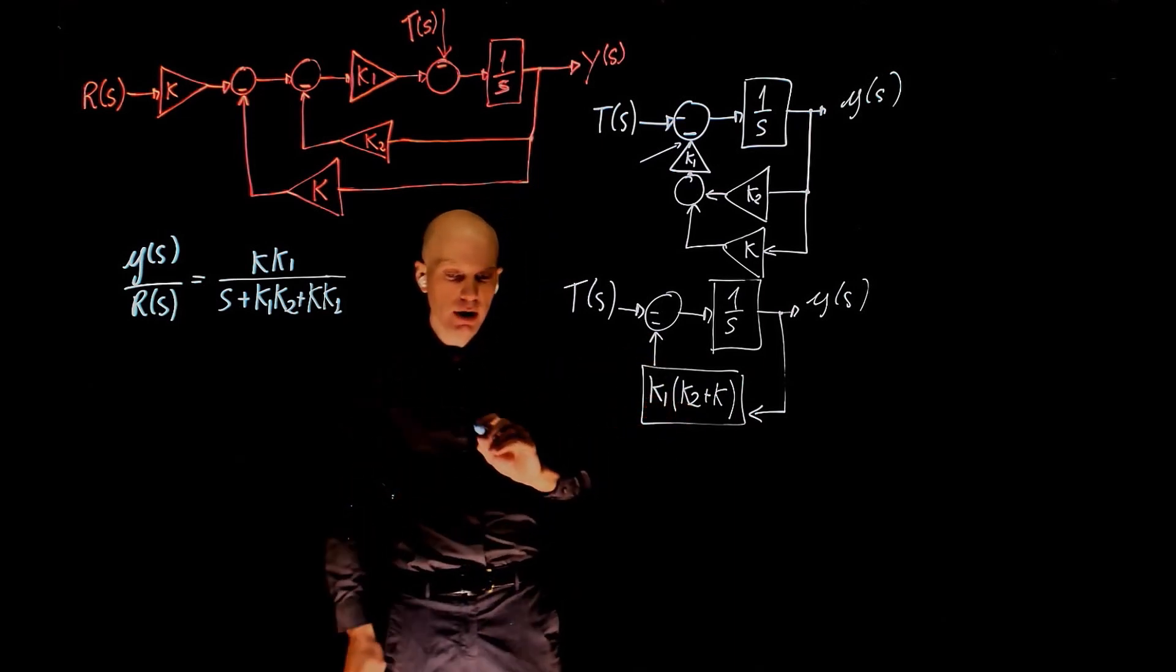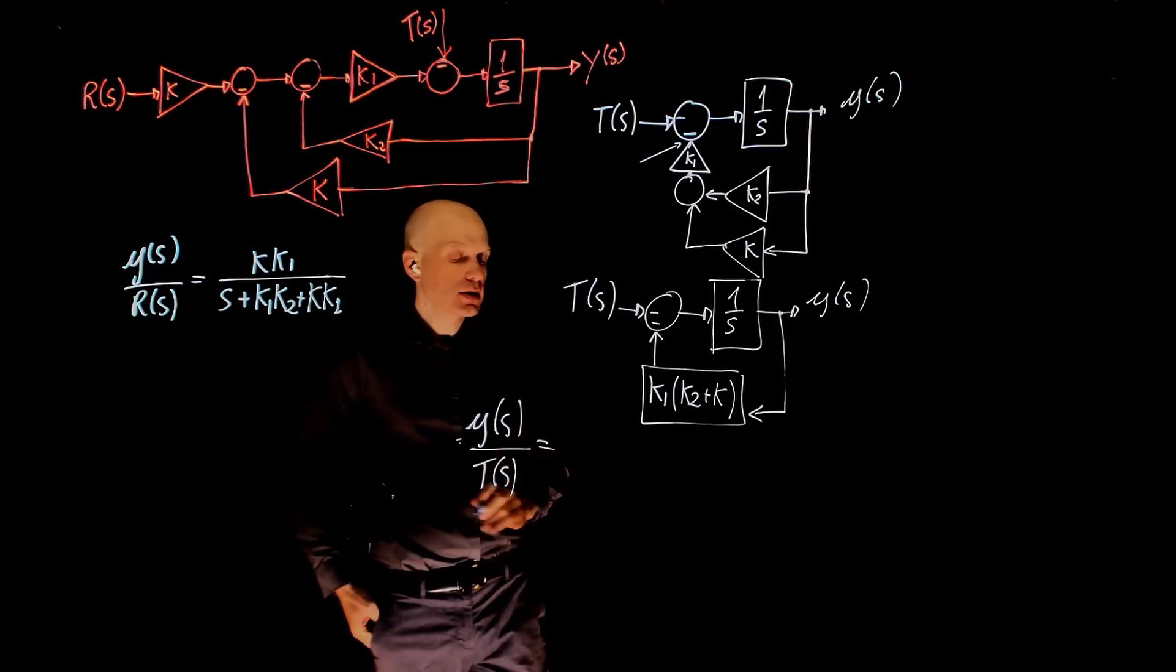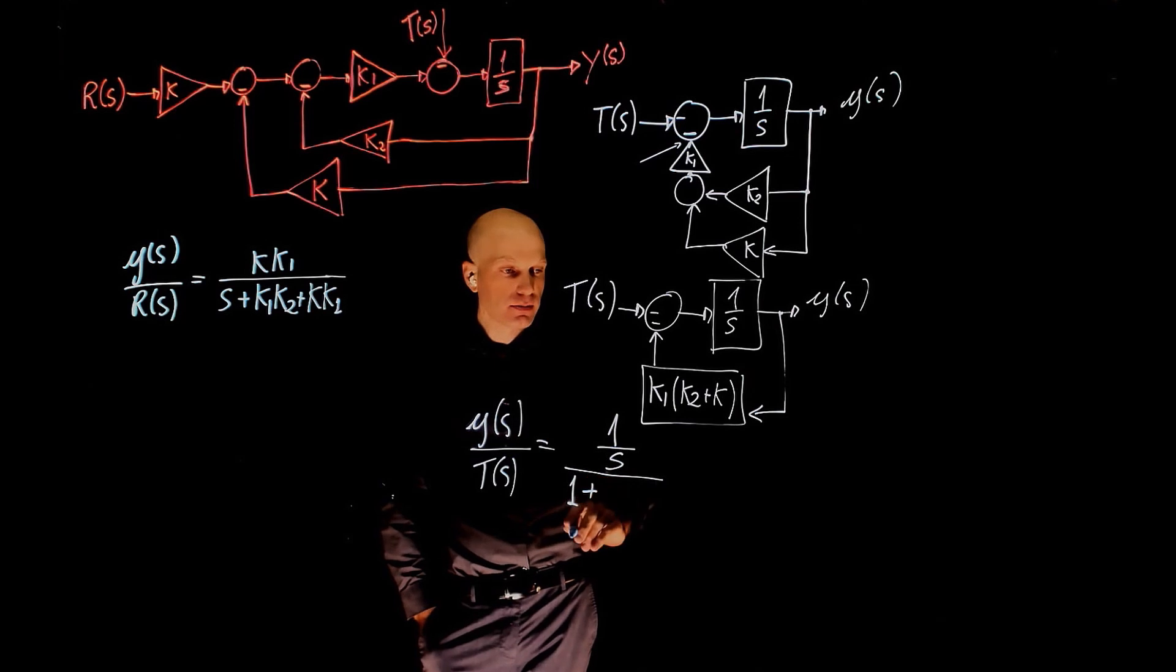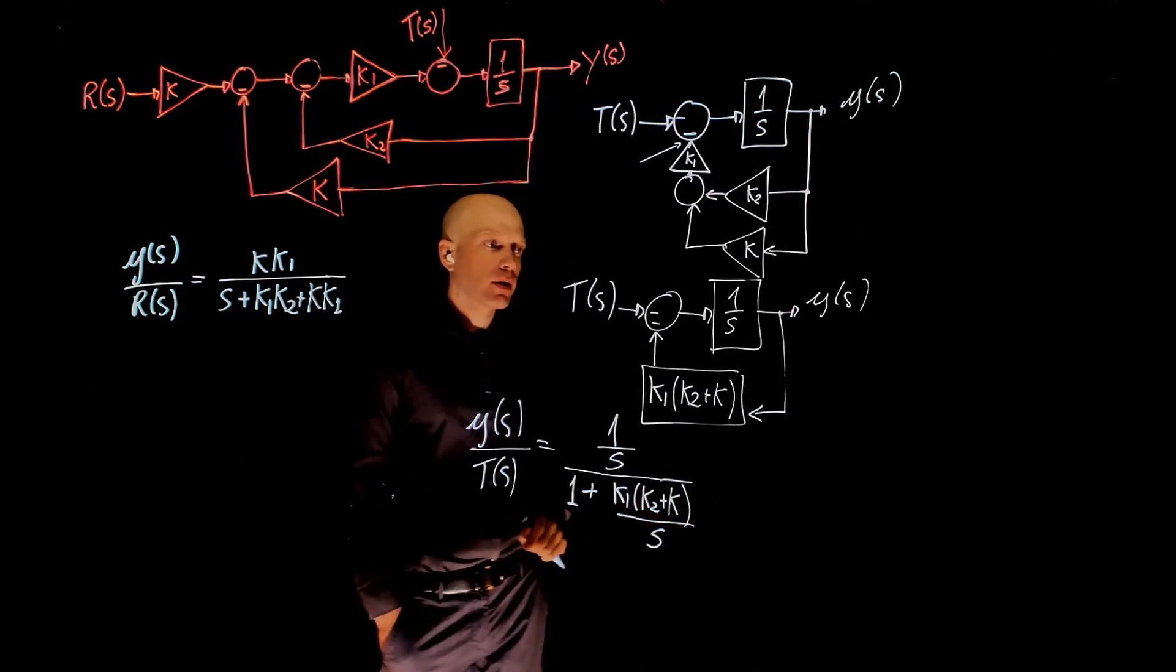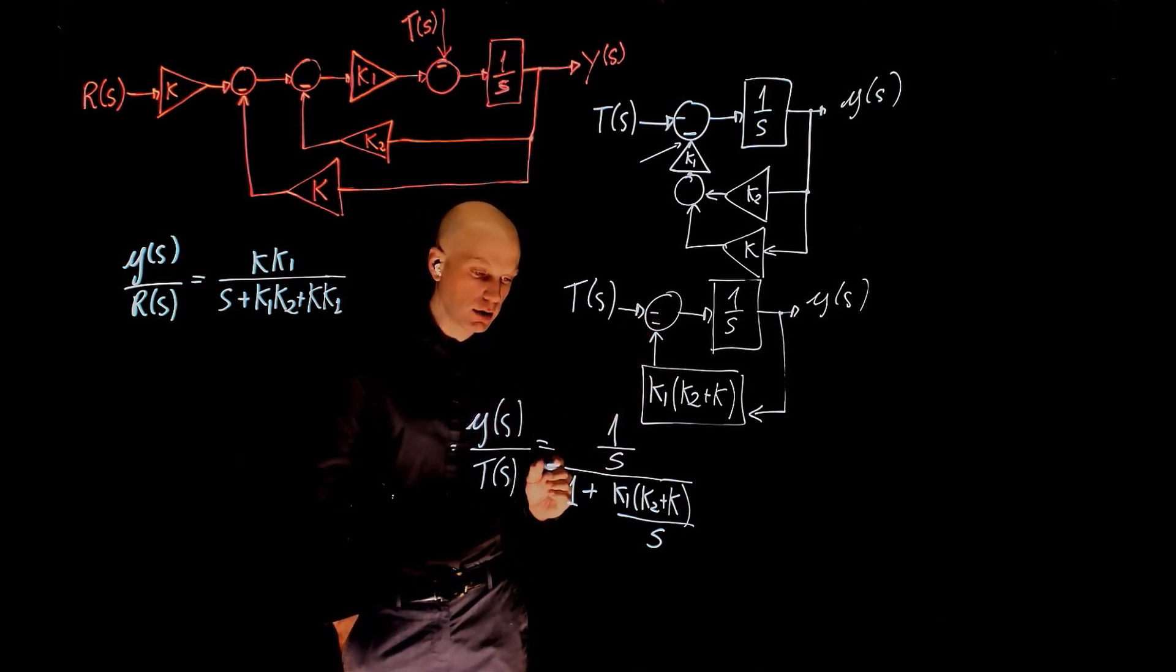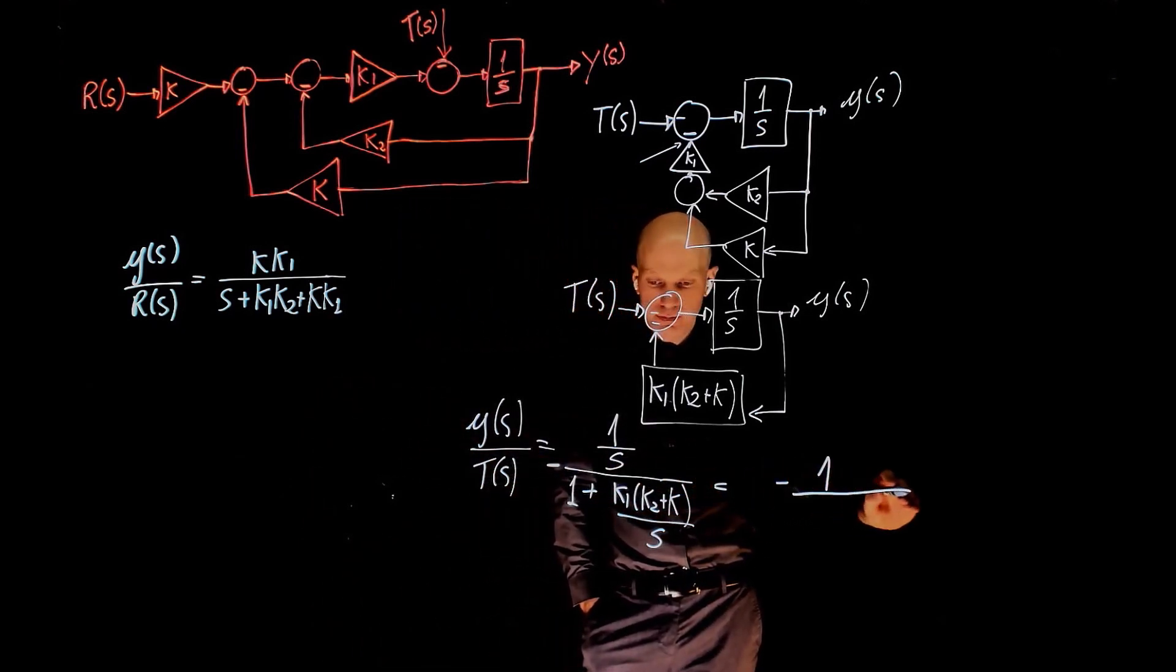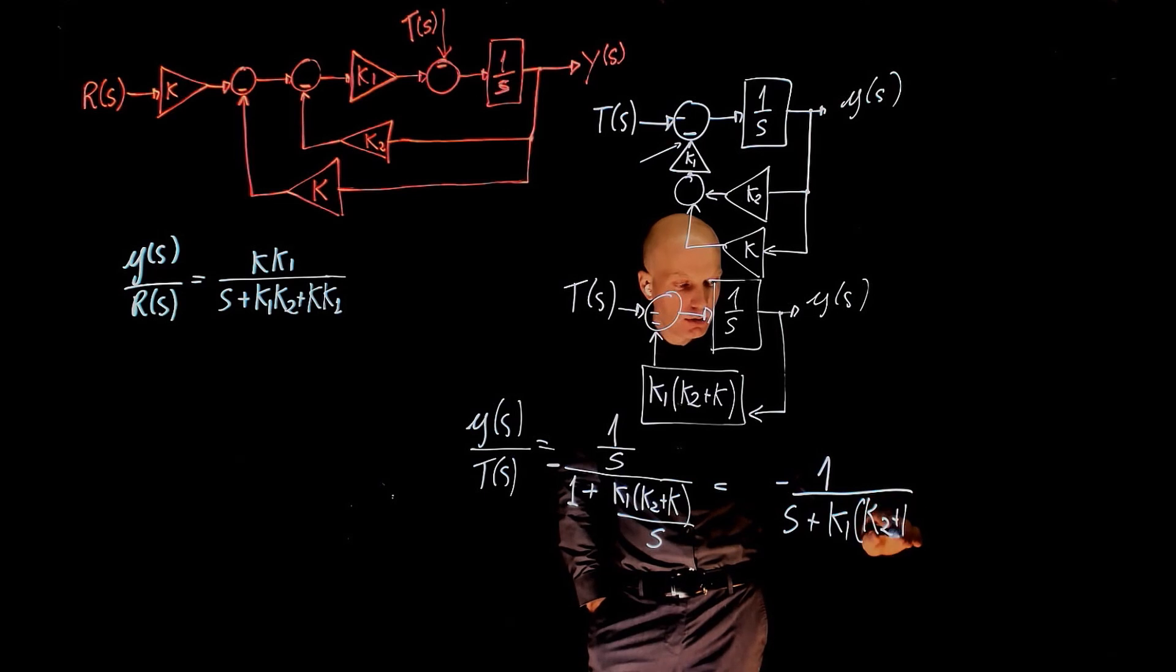Now, finding the transfer function is easy. Y of s divided by t of s is 1 over s divided by 1 plus 1 over s times k1 k2 plus k times 1 over s, so divided by s. And everything here multiplied by negative 1. See, this negative sign here needs to be taken into account. This now simplifies to negative 1 over s plus k1 k2 plus k.